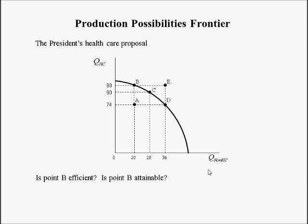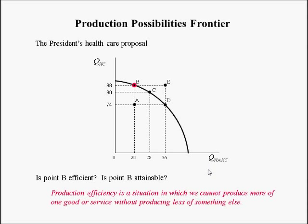Is point B efficient? Is point B attainable? Production efficiency is a situation in which we cannot produce more of one good without producing less of something else. So point B, by definition, is efficient — we'd have to give up other goods to get more of another good. Points B, C, and D all represent efficient production levels; they are both attainable and efficient.